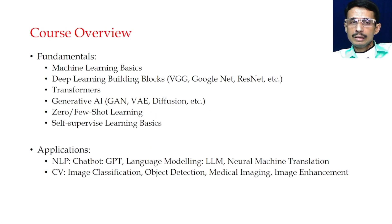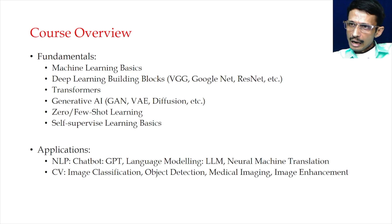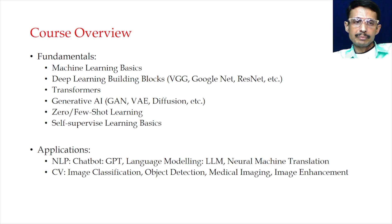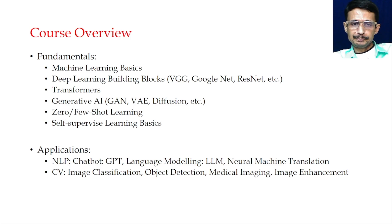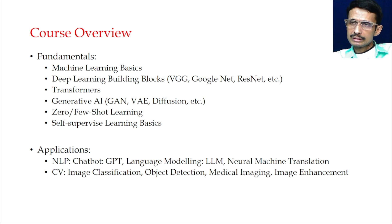Next, what is the more or less syllabus of this course? There are two important parts. One is the machine learning and deep learning architectures and how these architectures model vision and NLP problems. We start from the machine learning basics, slowly go to deep learning, then cover very important deep learning models like VGG, GoogleNet, etc. Then we slowly move to some recent deep learning models like transformers.